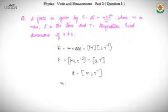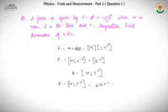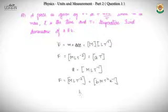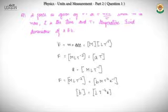Similarly, we find B. Force equals MLT⁻² and we use the term involving temperature (K). After cancellation, the dimension of B comes out to be LT⁻⁴·K.